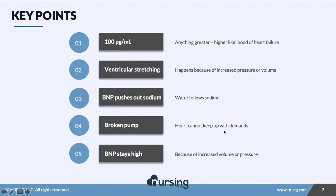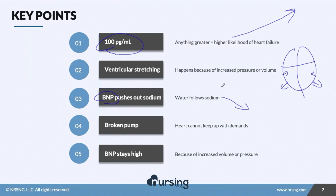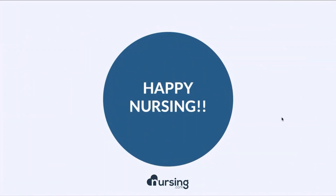Quick key points: the BNP normal lab value is 100 — anything greater indicates a high likelihood of heart failure, and as the level climbs, the likelihood increases. During ventricular stretch, BNP is released to help get rid of excess volume. BNP pushes sodium out, and water follows sodium. In a patient with heart failure, it doesn't matter how much BNP is released — the broken pump can't keep up with the demands, and BNP stays high or continues to grow as volume cannot come off. That's BNP in a nutshell. Happy nursing!